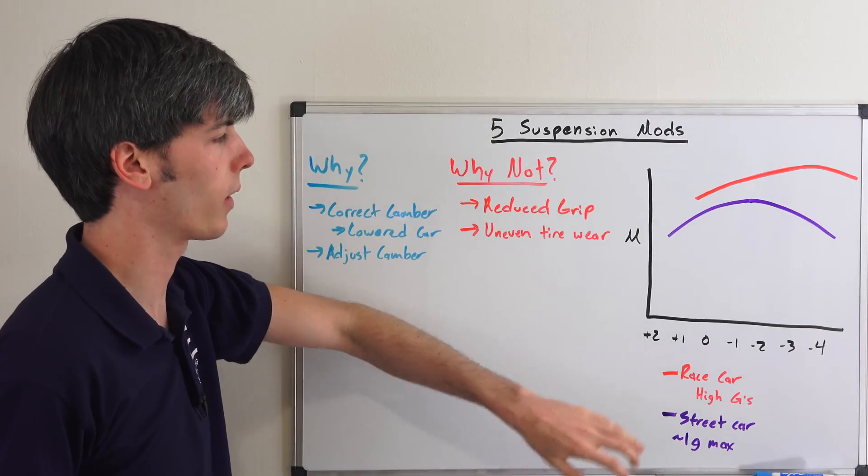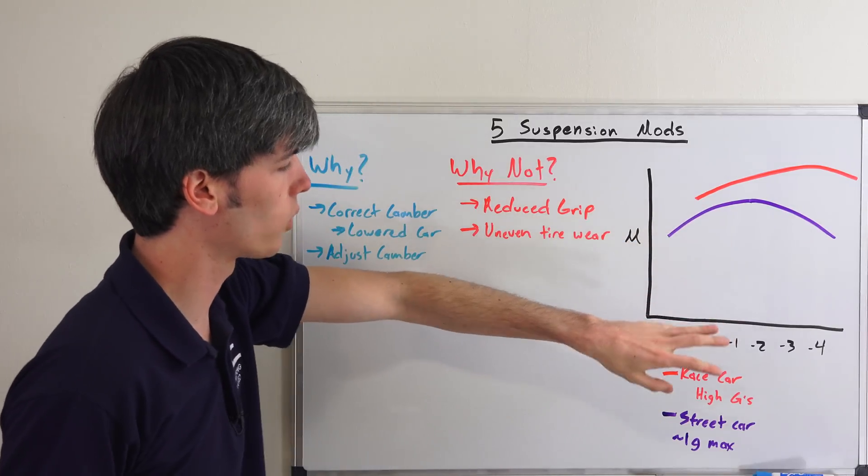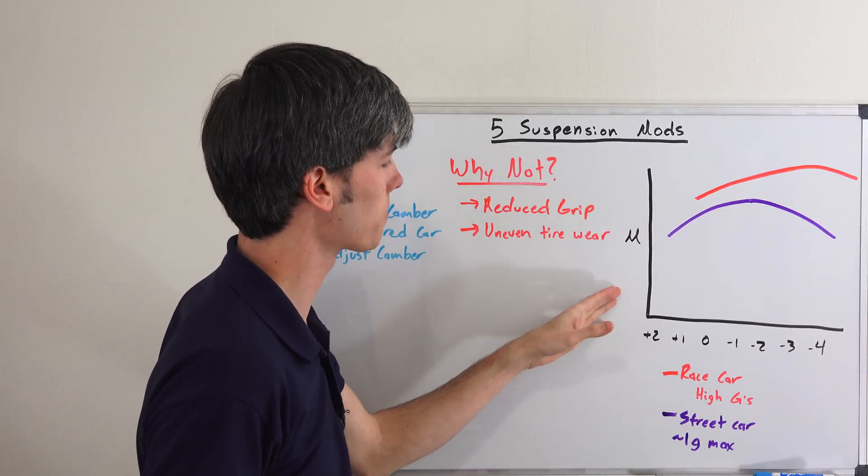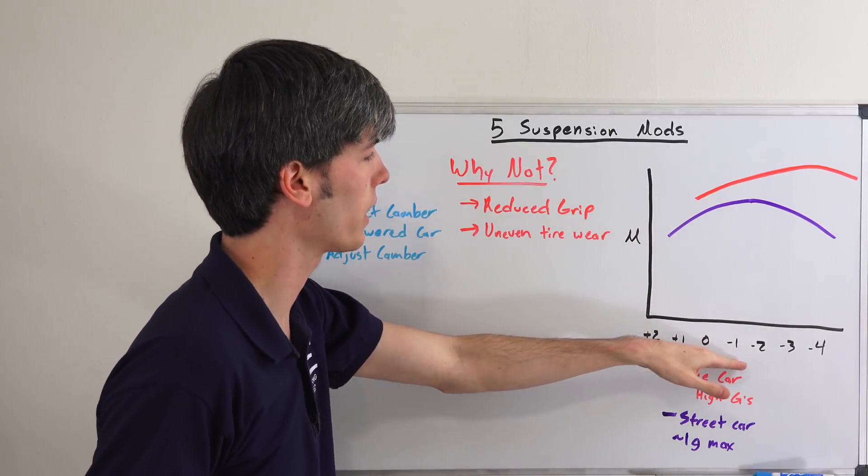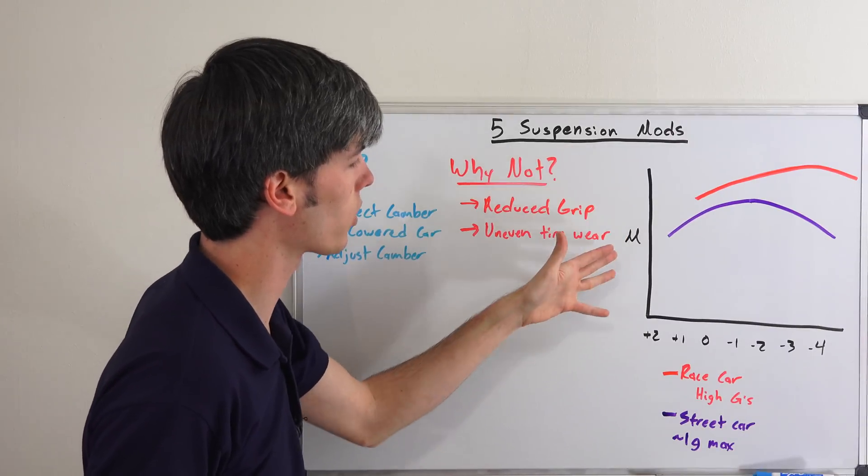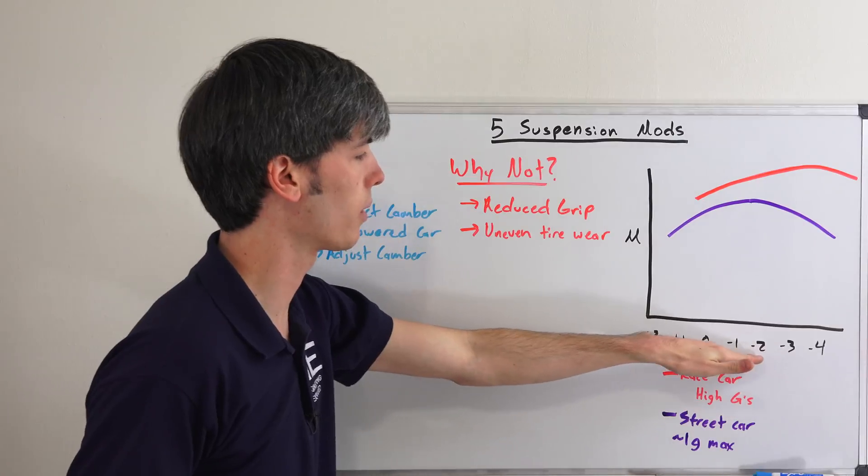Here we have a graph of what's typical for a road car and a race car. On the left we have the coefficient of friction, and on the bottom we have the camber angle. The left is basically the amount of grip you have—the higher this is, the more grip you have. Here we have the camber angle.